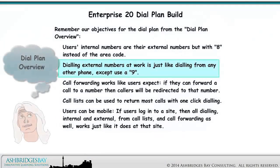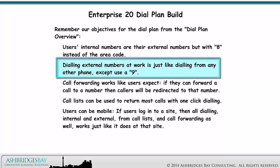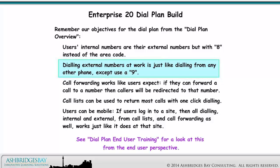Remember our objectives for the dial plan from the Discussion and Dial Plan Overview. In this drawing, we focus on the second objective: dialing external numbers at work is just like dialing from any other phone, except use a 9. See Dial Plan End User Training for a look at this from the end user perspective.